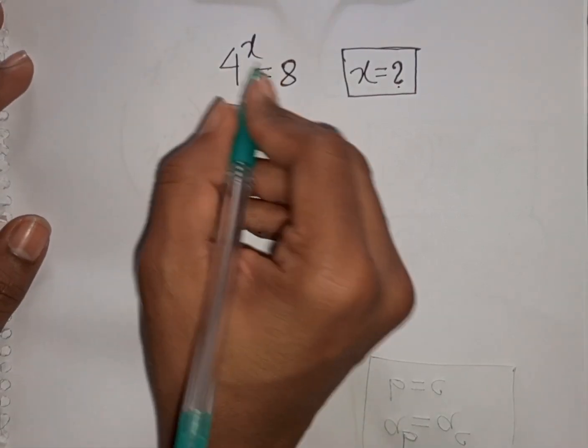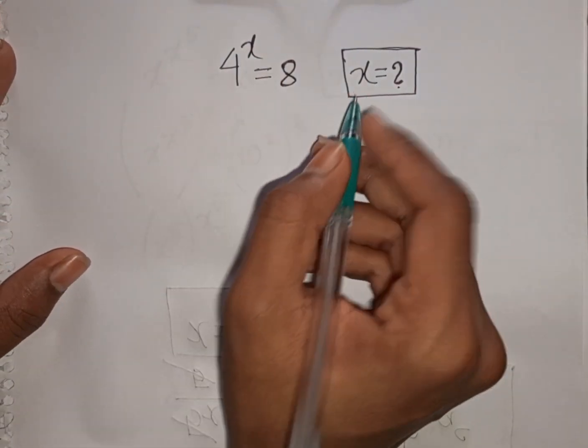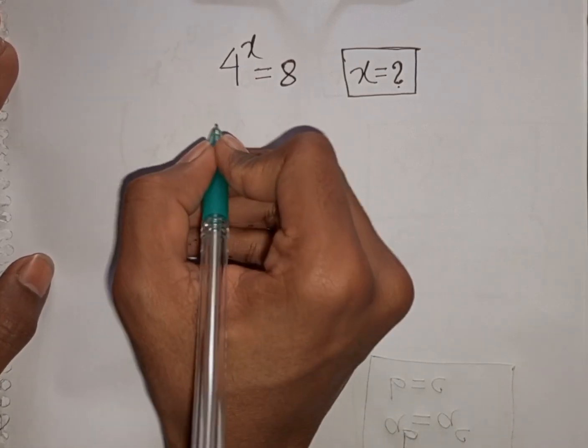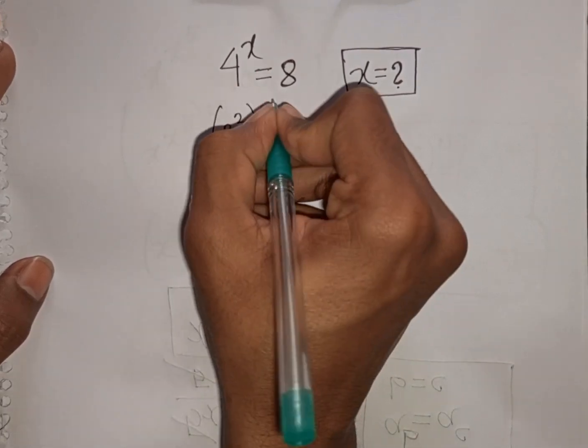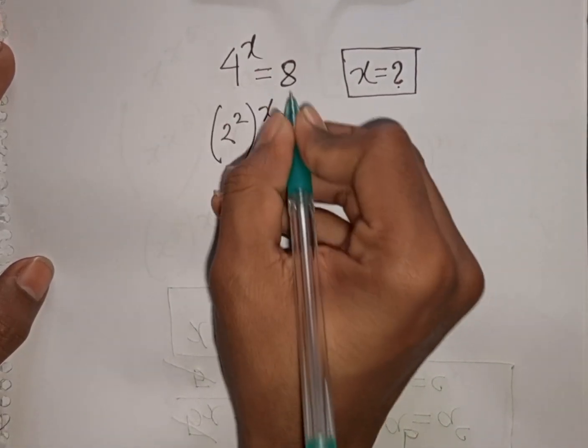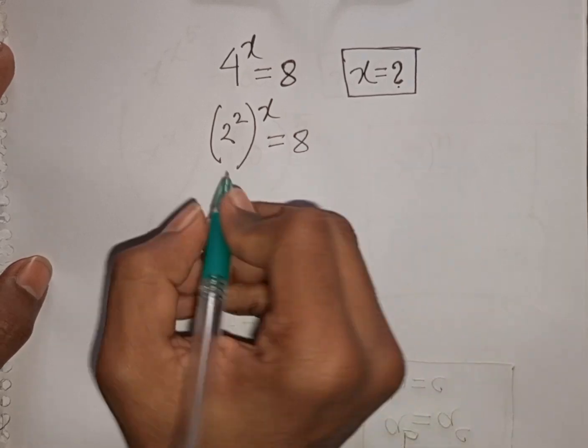How to solve 4 power x is equal to 8, find the value of x. So we have 4 power x can be written as 2 power 2, then bracket power of x is equal to 8.